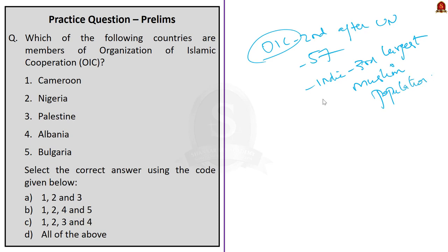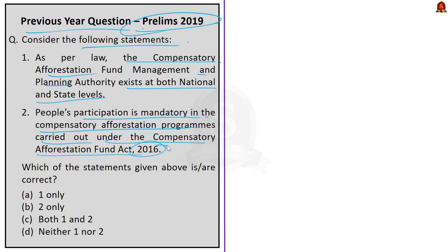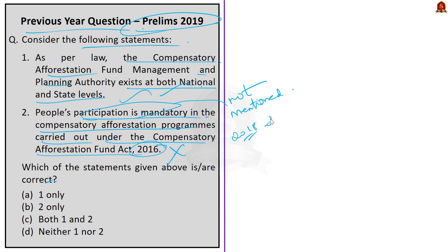Now let's solve practice questions. Question 1 (Prelims 2019): Regarding CAMPA — Statement 1: CAMPA exists at both national and state levels. Statement 2: People's participation is mandatory in compensatory afforestation programs under the CAF Act 2016. Statement 1 is correct; Statement 2 is incorrect — the Act deals with the fund and its management, while the CAF Rules 2018 mention people's participation in management of working plants. Correct answer: Option A — Statement 1 only.